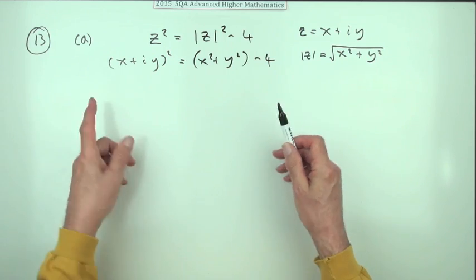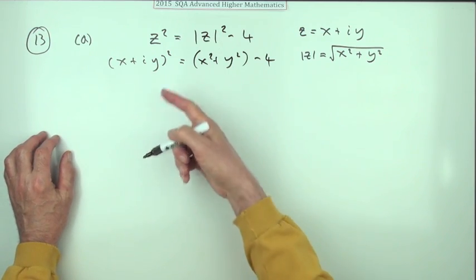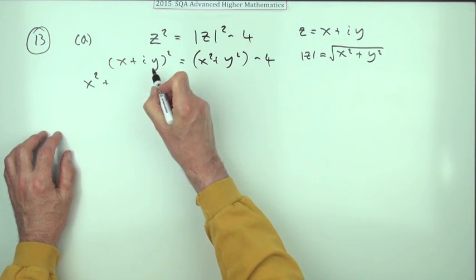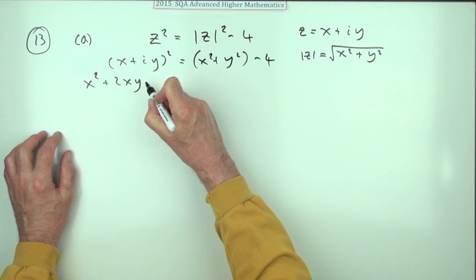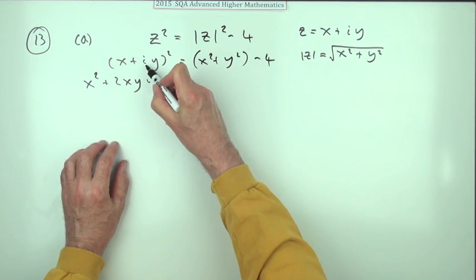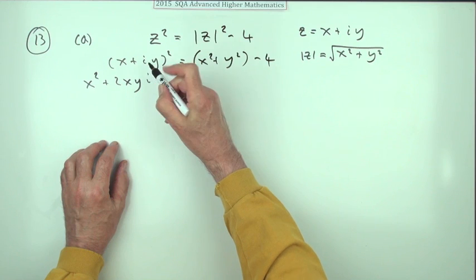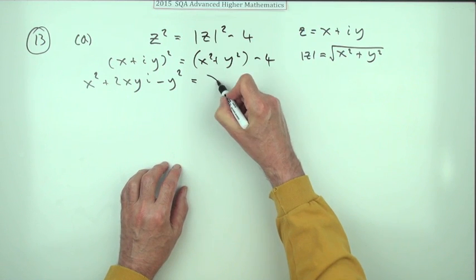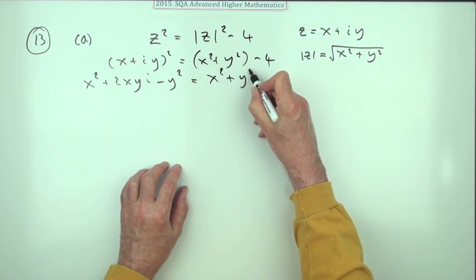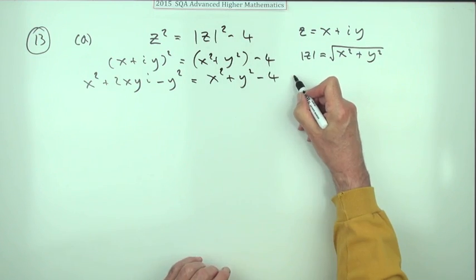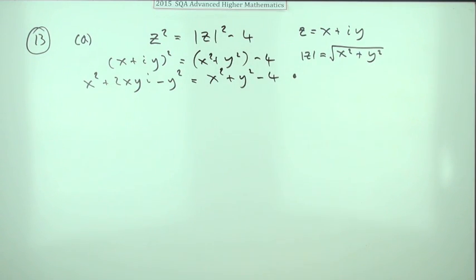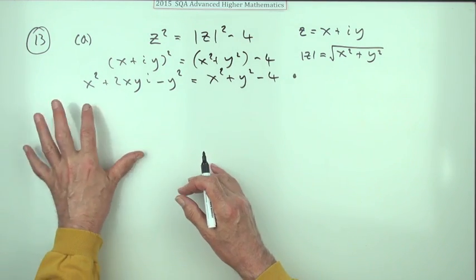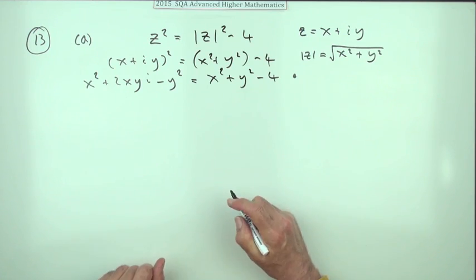Multiplying this side out: x squared plus 2xy·i — i'll put the i at the end — and i squared is negative one, so it'll be minus y squared. That equals the right hand side. That's definitely the first mark. Now gather it over: get the x's and y's on one side and numbers on the other.